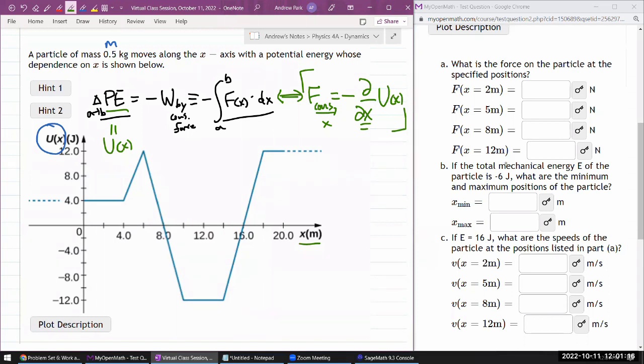So at x equals 2, that's somewhere here, that's flat. So the force has got to be zero. That's why the potential energy isn't changing, because it's not doing any work.